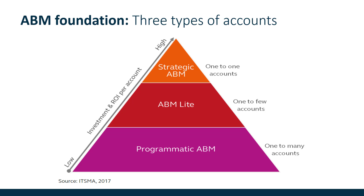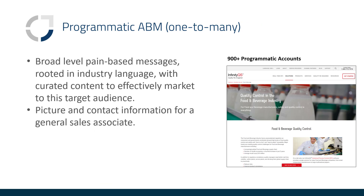Looking at our ABM foundation, there are three kinds of ABM: programmatic, light, and strategic accounts. With your program, we have about 900 folks in the programmatic account structure, and they're receiving broad-level pain messages. Everything is rooted in industry. When those people hit the website, we focus on routing them to the industry page that fits their industry so they can learn more about your offerings in the right context.